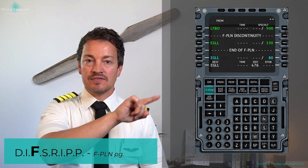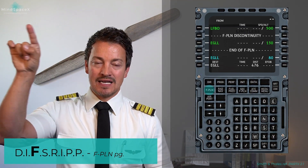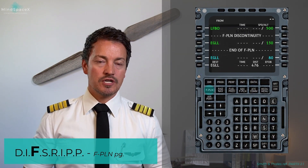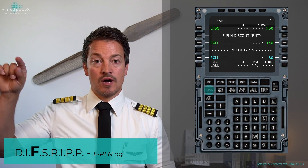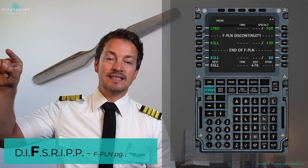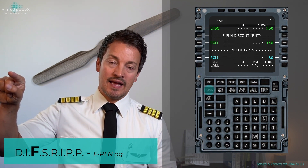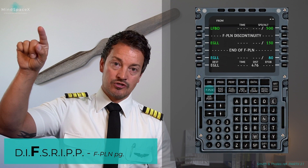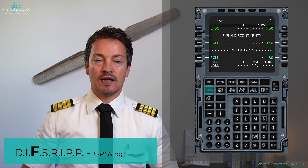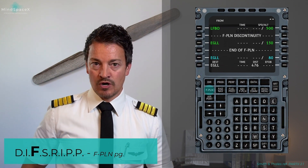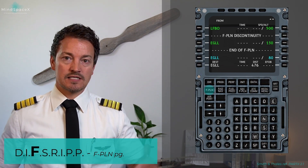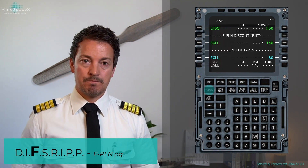That gives us a complete flight plan profile. If we have an alternate, we will do the same thing from our destination — a departure out, an in-route, and then an arrival and a landing runway at our alternate. So this is how we set it up.